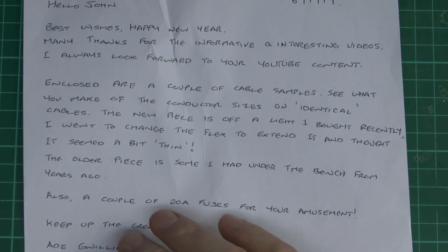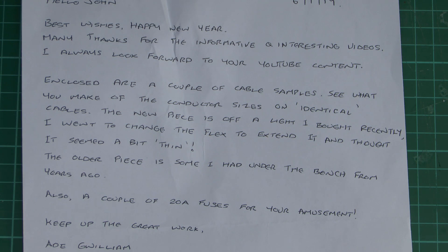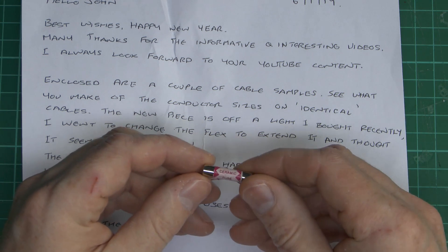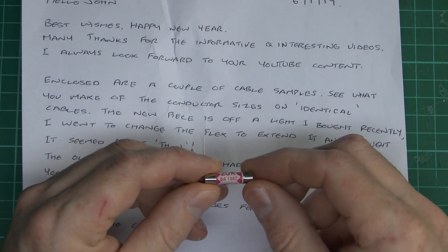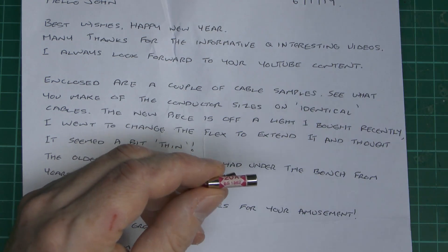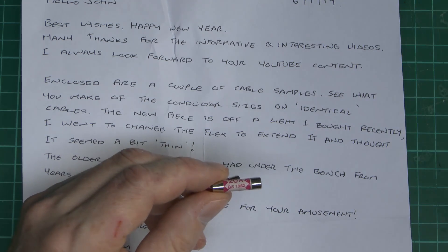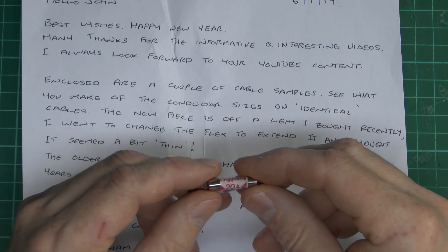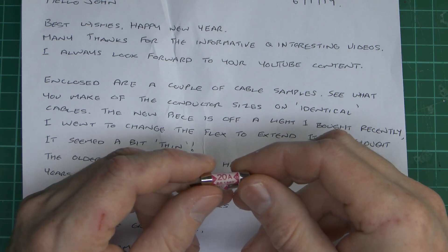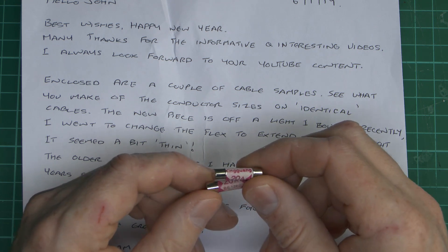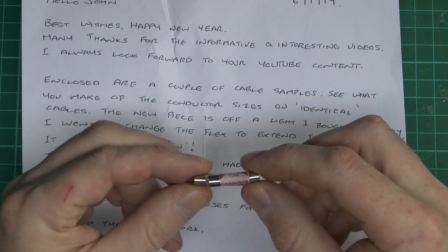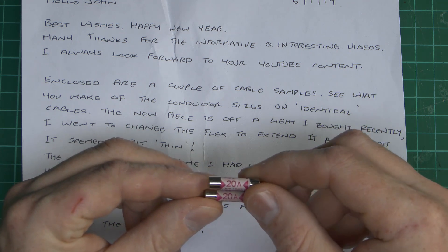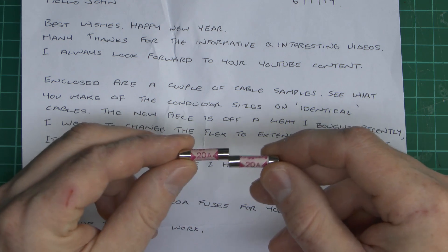And we've also got a couple of 20 amp fuses, which though may look perfectly nice and genuine, if you didn't know, BS1362 is the standard for fuses which go into plugs like this, and the standard defines the maximum rating as being 13 amps. So anything above 13 is clearly not made to the standard, and therefore is a pile of fake rubbish. And that's exactly what we've got here, these are 20 amp ones allegedly.